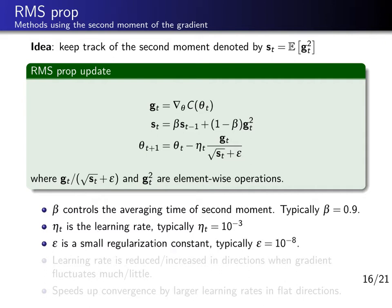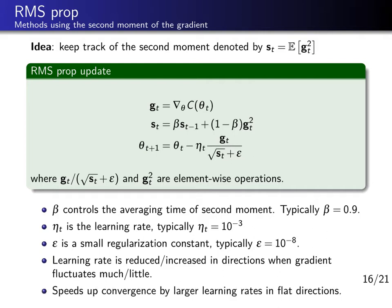Epsilon is just a regularization constant that avoids dividing by 0 in the parameter update equation. The learning rate is reduced or increased in directions when the gradient fluctuates much or little. The effect of this RMSprop update is that if the gradient fluctuates a lot we are reducing the learning rate in that direction because it's a sign for making steps that are too large. Whereas if the gradient fluctuates not much over subsequent updates, that is a sign that we can make larger steps and make more progress in the corresponding directions. This speeds up convergence by using larger learning rates in flat directions, which is useful for anisotropic minima or lengthy canyons.